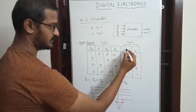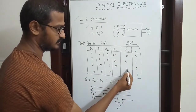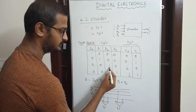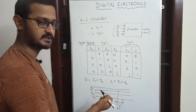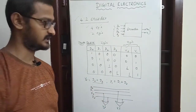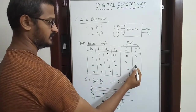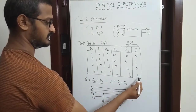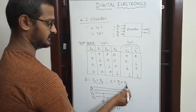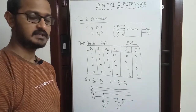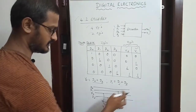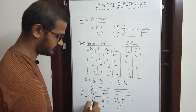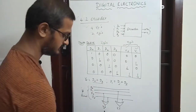Looking at the y0 equation: y0 is 1 when d1 or d3 is active, so the gate used is an OR gate. There are 4 input lines and we OR them to get y0 and y1.